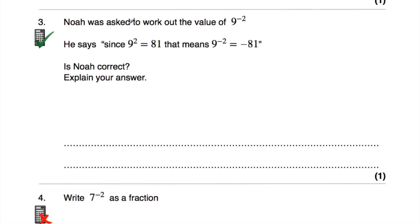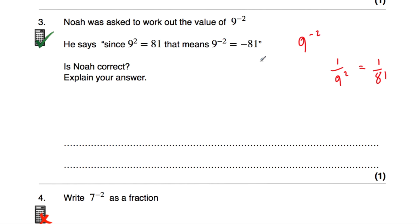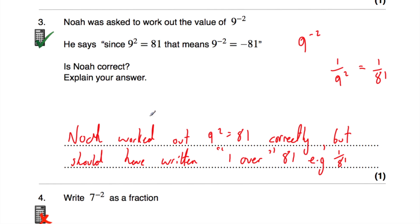Question 3: Noah was asked to work out 9 to the power of negative 2. He says that since 9 squared is 81, the answer is negative 81. Noah is not correct. A negative power doesn't make the answer negative — it means we do the reciprocal. So 9 to the power of negative 2 equals 1 over 9 squared, which is 1 over 81, not negative 81.